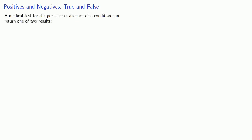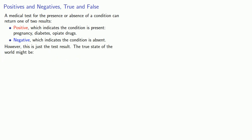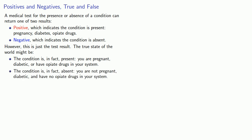It's easiest to frame the question in terms of medical tests. A medical test for the presence or absence of a condition can return one of two results: a positive result, which indicates that the condition is present — such as a test for pregnancy, diabetes, or opiate drug use — or a negative result, which indicates that the condition is absent. However, this is just the test result. The true state of the world might be that the condition is in fact present, or in fact absent.